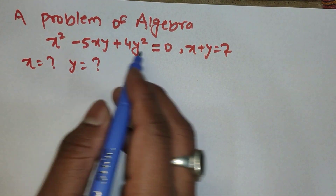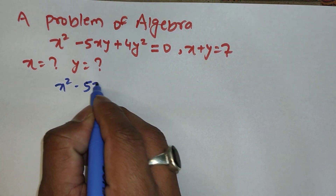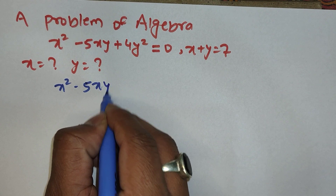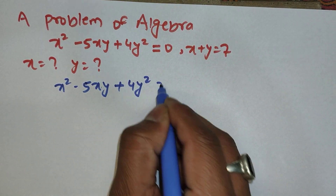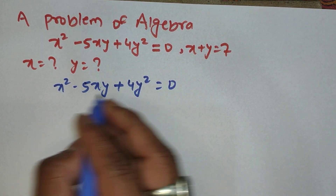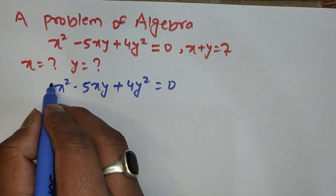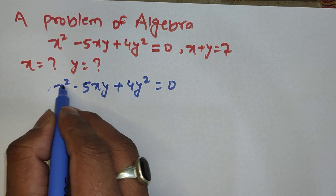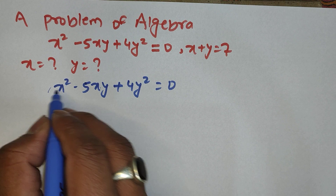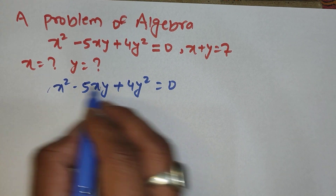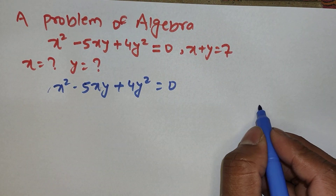Let's write our main equation: x² minus 5xy plus 4y² equals 0. Here we can find the factors of 4 because the coefficient of x² is 1, so we don't have to worry about that coefficient.